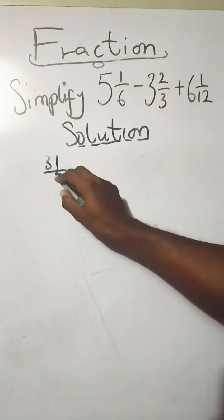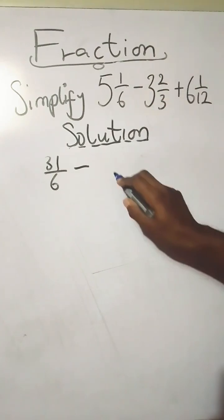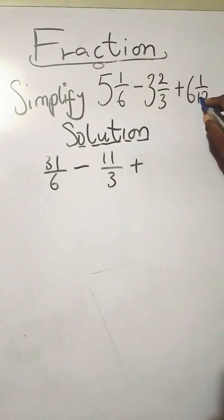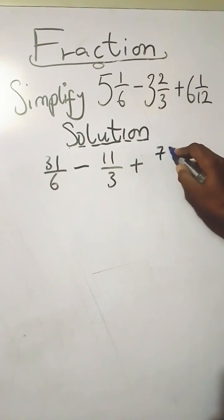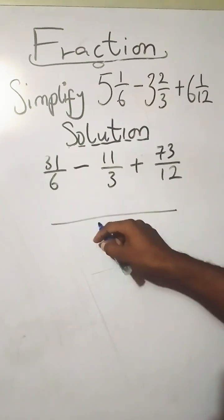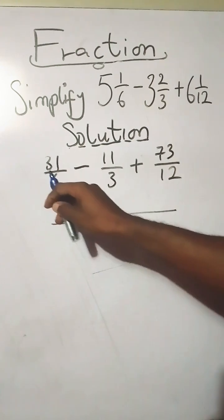Plus 6 times 12 is 72, plus 1 is 73 over 12. The LCM still remains 12, the LCM of the denominators. Now next, you have 6 goes into 12 twice, that's 2 times, and that multiplies the numerator to give you 62.